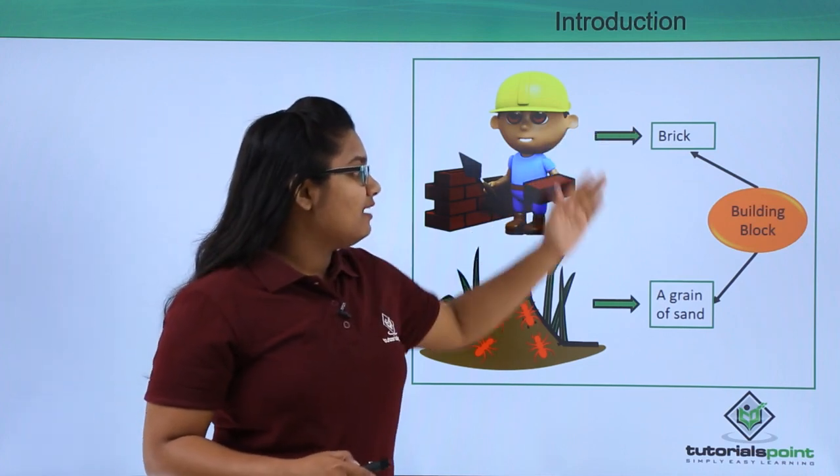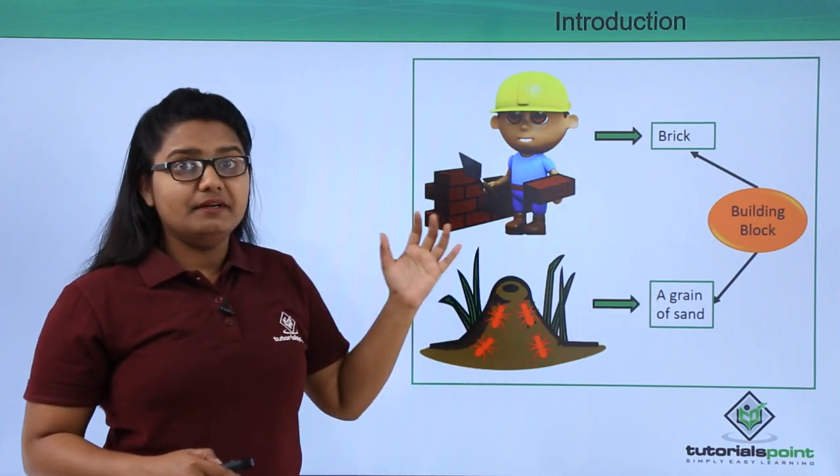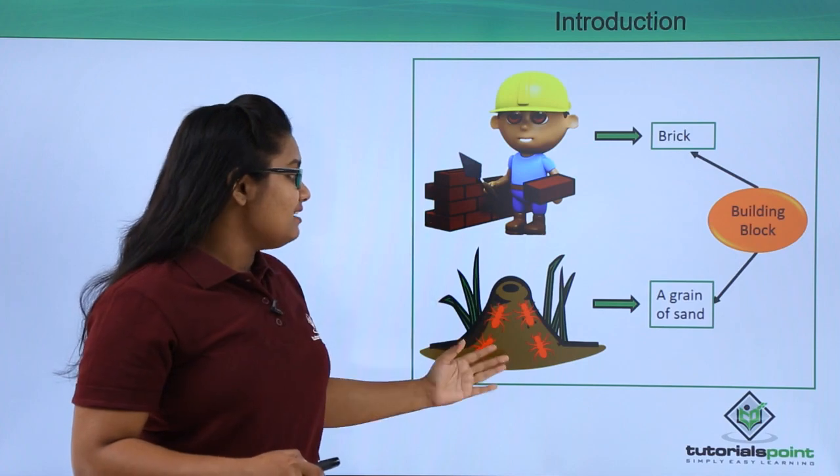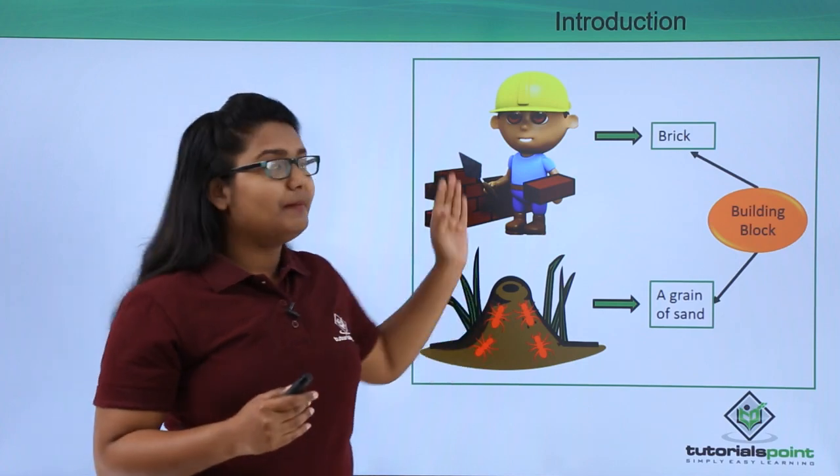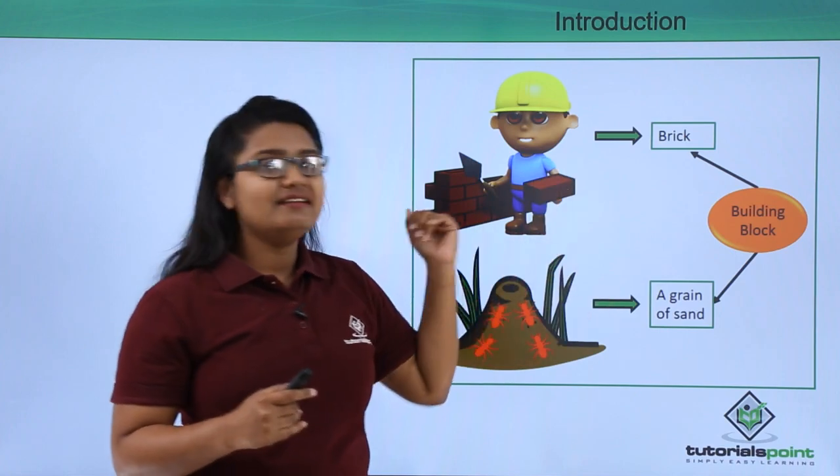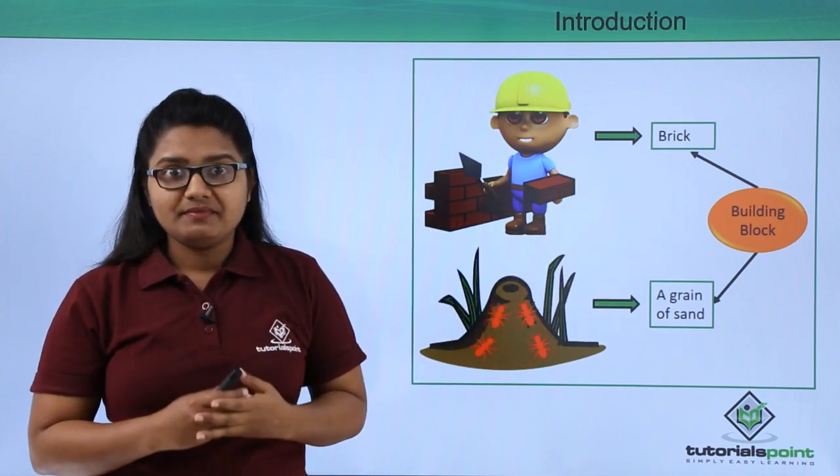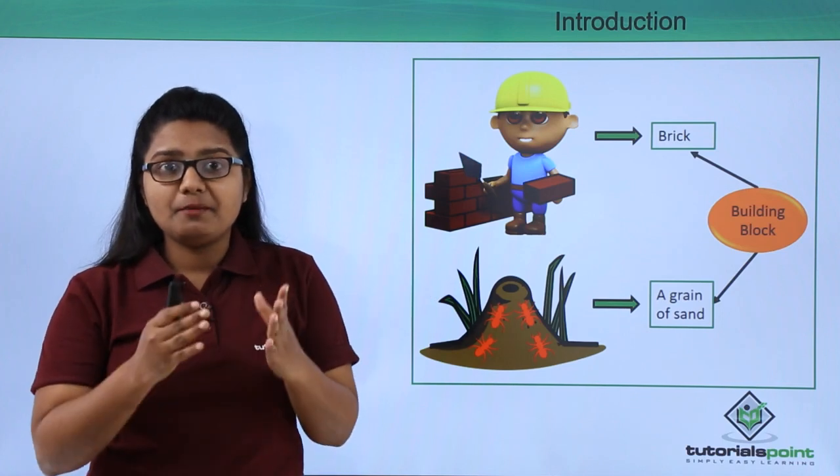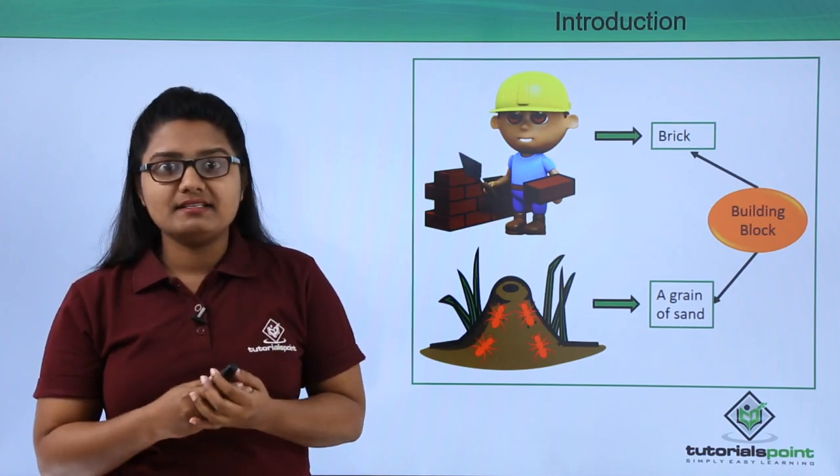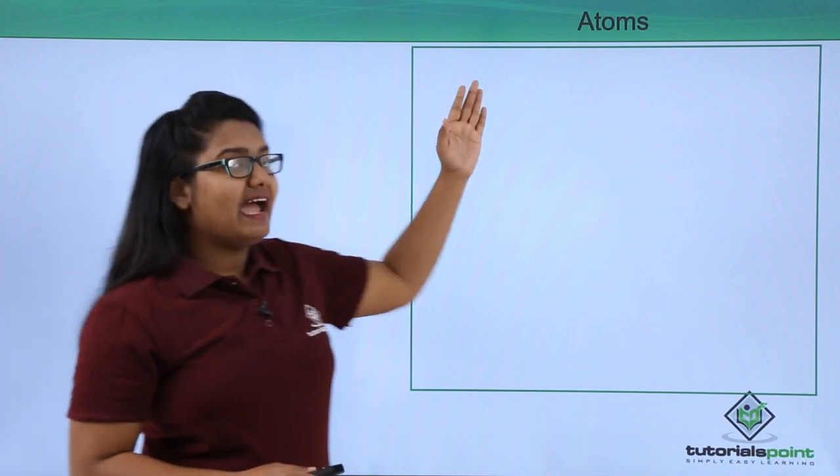We call a brick and a grain of sand building blocks of a building and an anthill because these two things are made up of bricks and sand respectively. In the same way, everything that we see around is made up of extremely small particles which we call atoms.